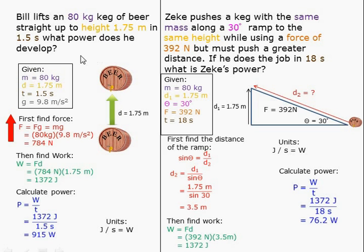First we determine what information is given. The mass is 80 kilograms, the displacement is 1.75 meters, time is 1.5 seconds, and gravity is 9.8 meters per second squared.